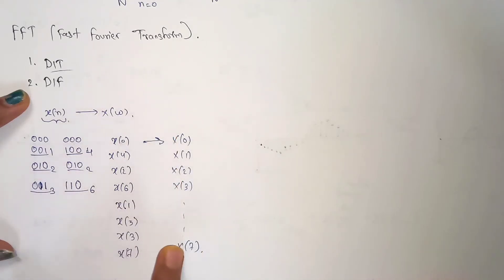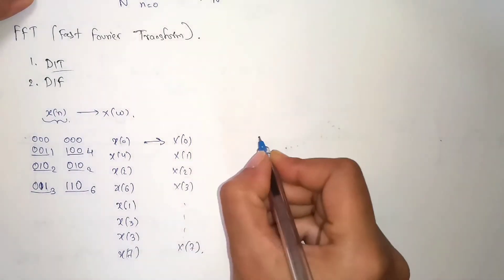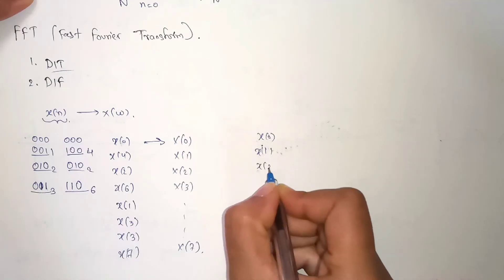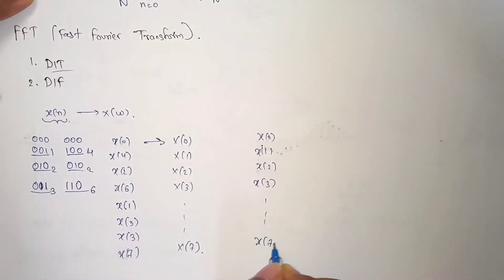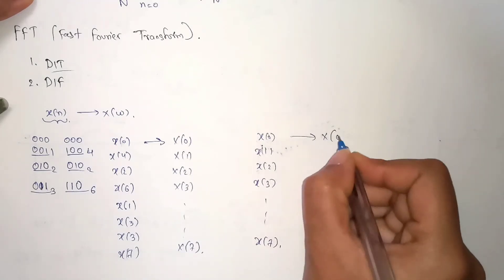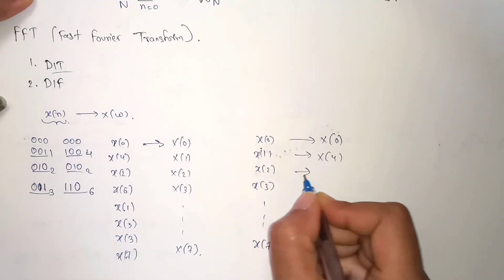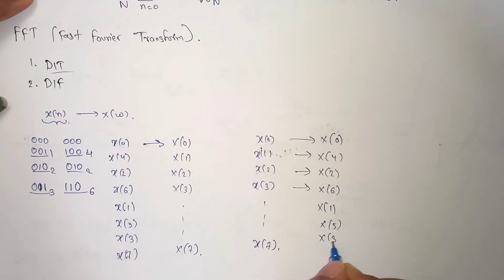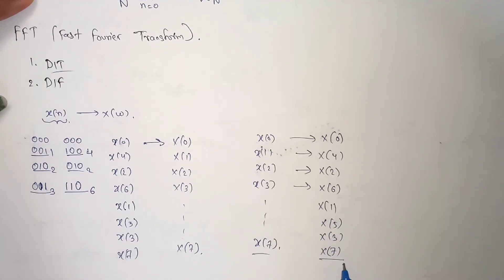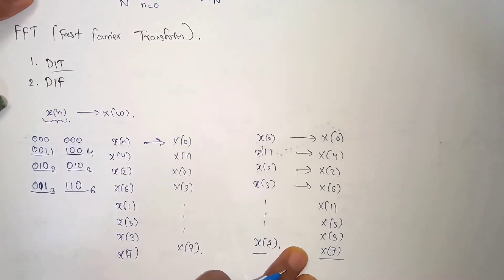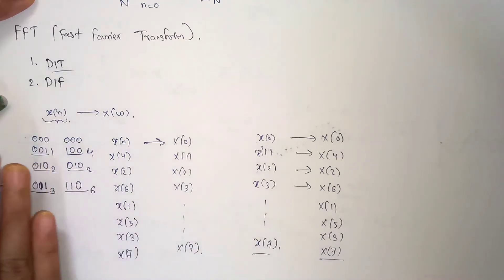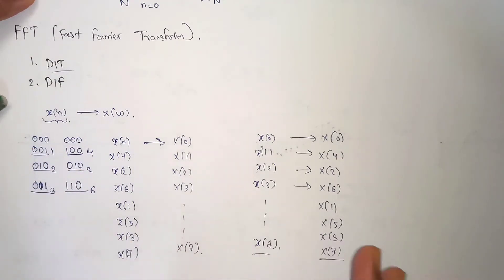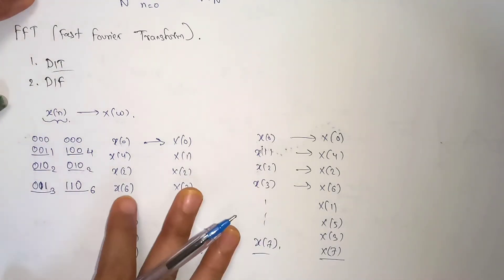In Decimation in Frequency it is the opposite: we give the input in normal order — x(0), x(1), x(2), ..., x(7) — and we get the output in bit-reversed order: X(0), X(4), X(2), X(6), X(1), X(5), X(3), X(7). So in DIT the input indices are bit-reversed and the output is normal; in DIF the input is normal and the output indices are bit-reversed. I will show the butterfly diagram in a separate video — this is just to give you an idea of how it works.